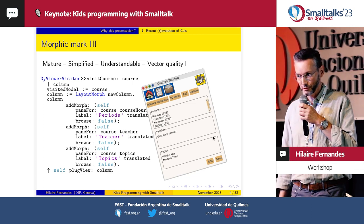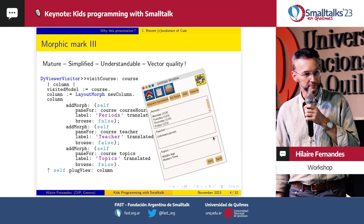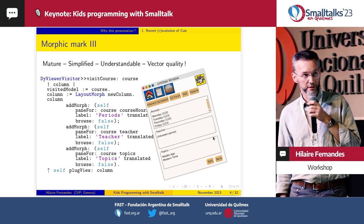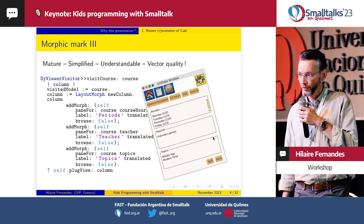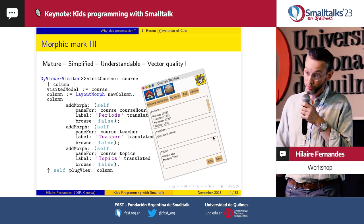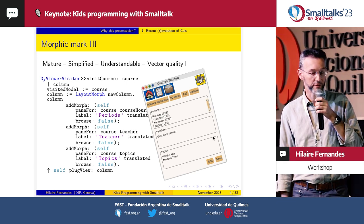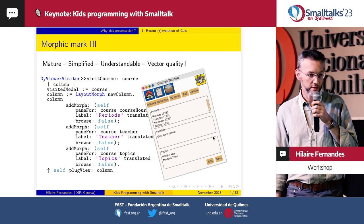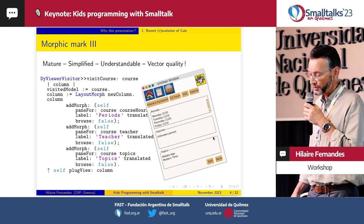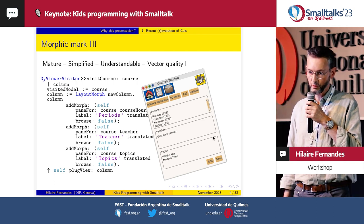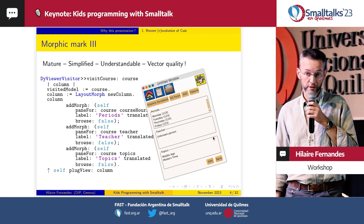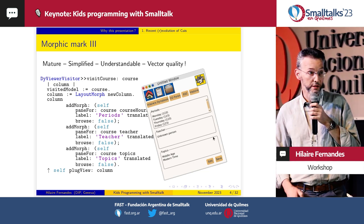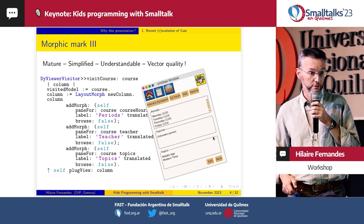One of the first reasons is I just want to talk about Cuis, because Cuis has been doing very well since a couple of years. We have this very mature Morphic Mark III version of the visual capability, and the system is understandable. The Morphic system is easy to understand, and there is this nice vector graphic engine, so that gives us a completely vectorial user interface. As you can see in this screenshot, it's all vectorial.